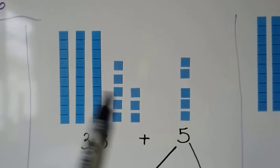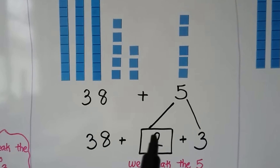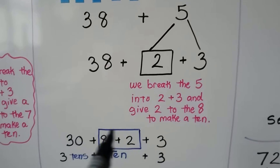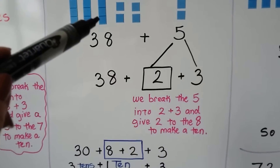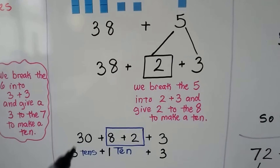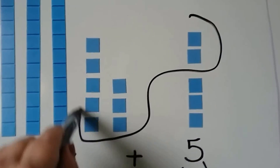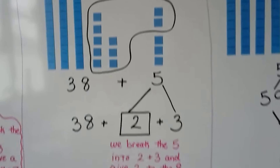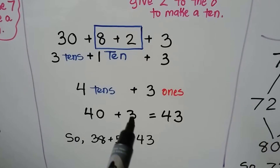Let's try it again. We've got thirty-eight in this group, and we have five in this group. We can break that five apart into a two plus three. We can give the two to the eight. Putting them together is going to make a ten. Instead of three tens and eight ones, we now have three tens and another ten that we made by grouping these together. We made a ten. We have three tens, four tens, and three ones. We have four tens and three ones. That's forty plus three, which equals forty-three.